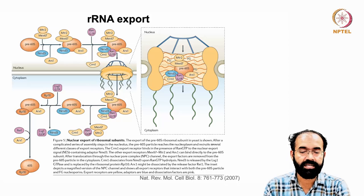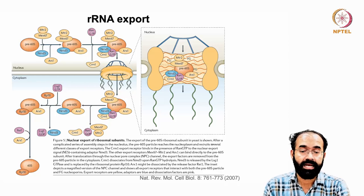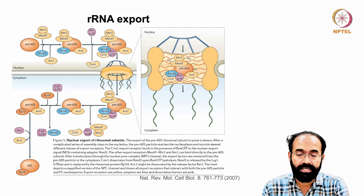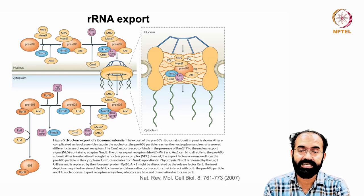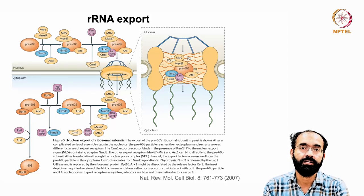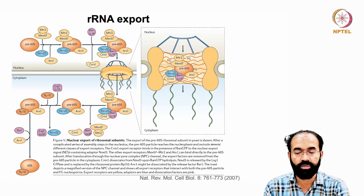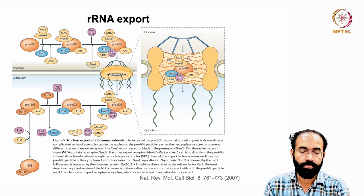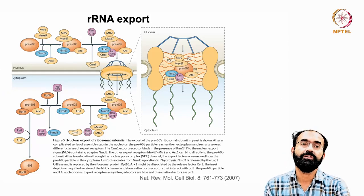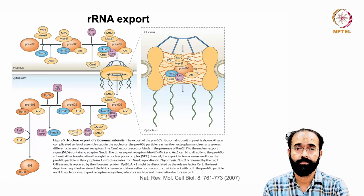In the ribosomal RNA export diagram, the pre-60S particle assembles with Mtr2, Mex67, Nmd3, and Arx1 on the nucleus side. Ran-GTP and CRM1 join to form a large export complex. In the cytoplasm, GTP hydrolysis causes disassembly of these proteins, yielding the mature 60S ribosomal subunit — ribosomal RNA plus permanently associated proteins. FG proteins in the lumen of the nuclear pore complex interact with Nmd3 and CRM1 to ensure slow, controlled transport rather than abrupt release. We will study RNA export-associated diseases in the next class.